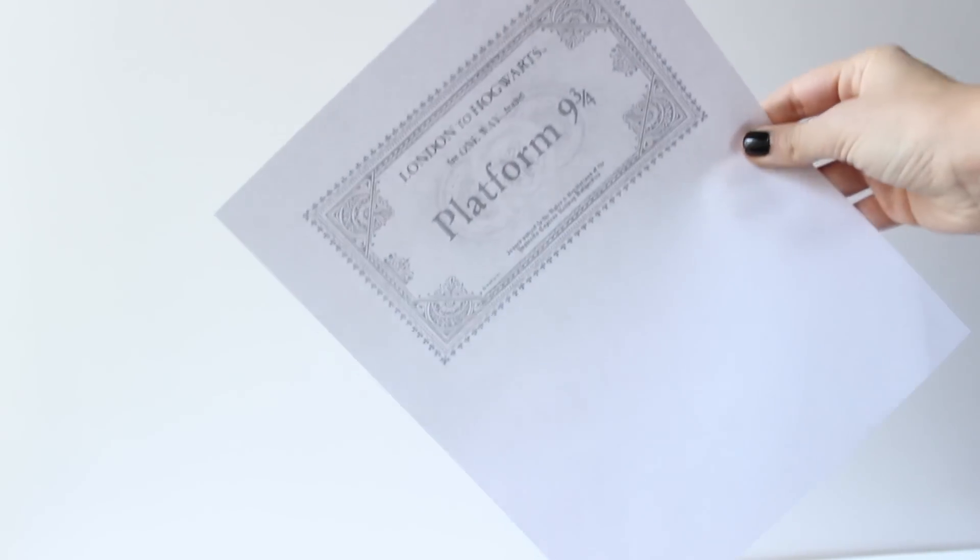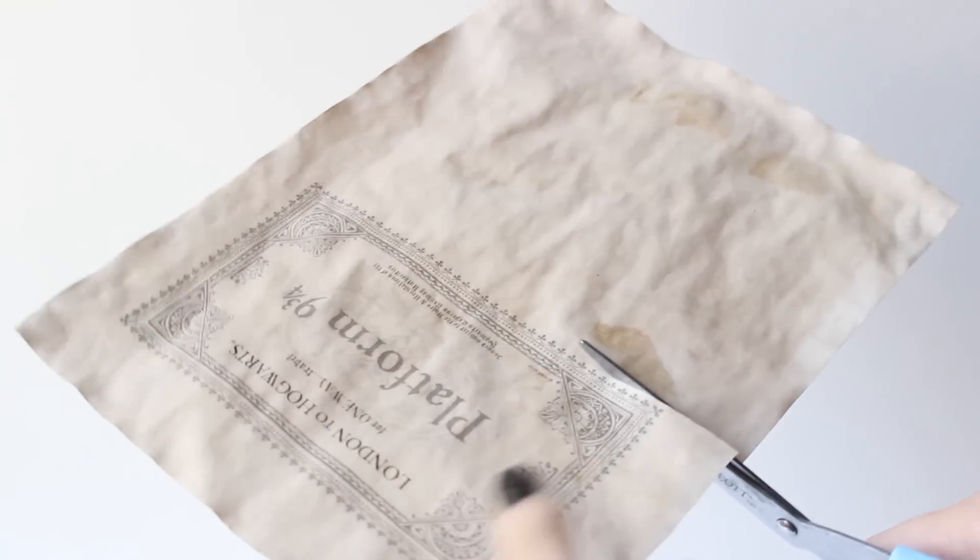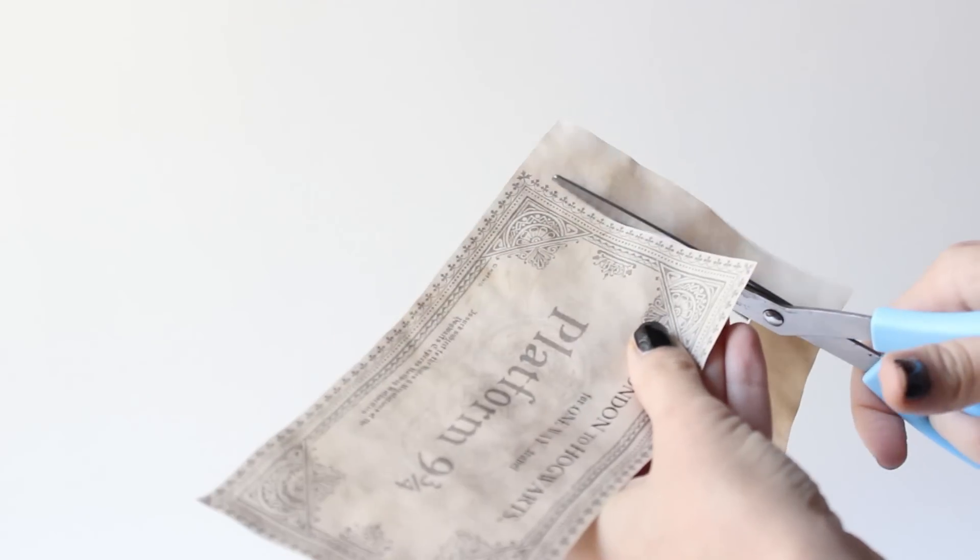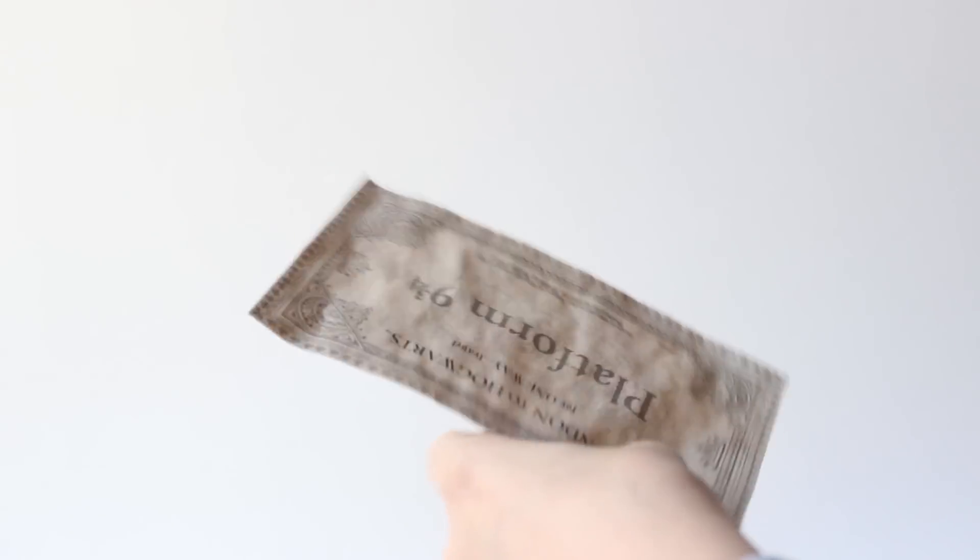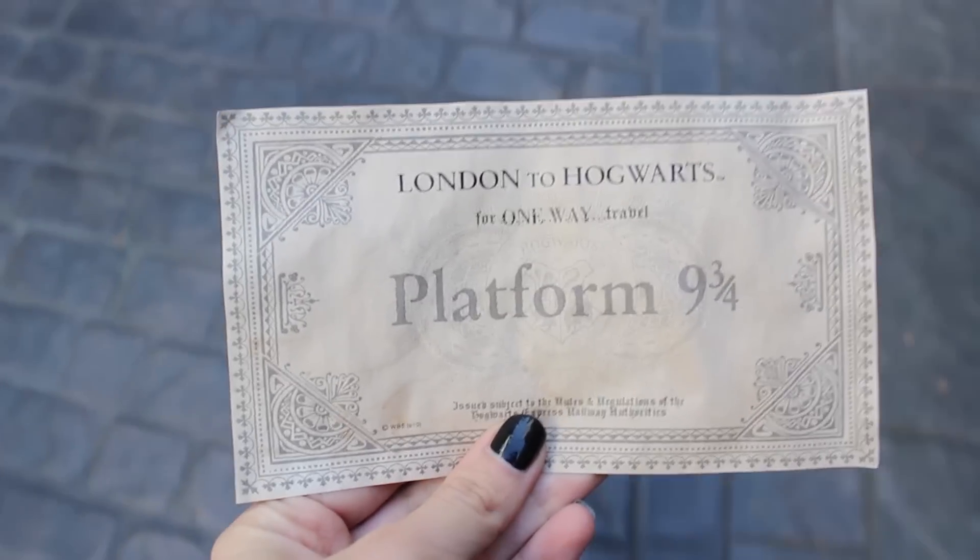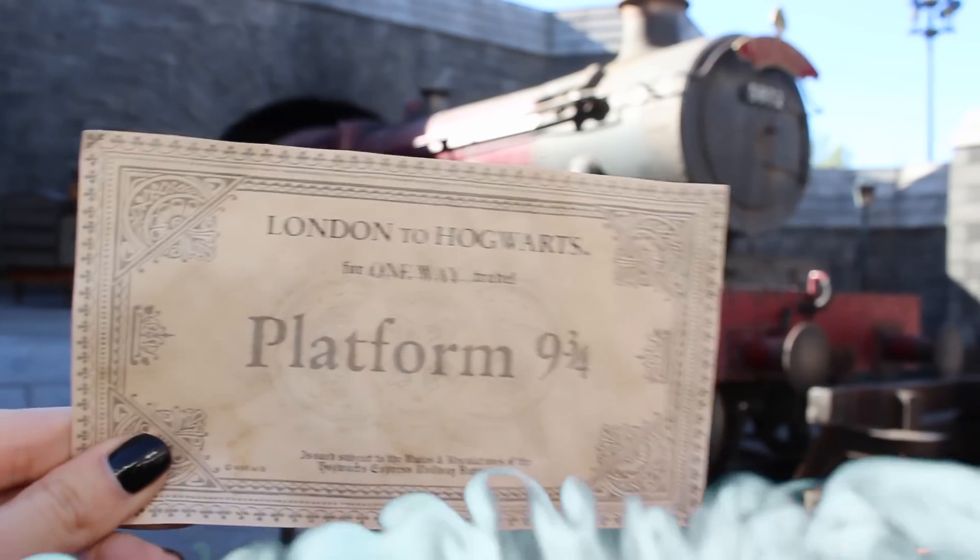Another essential part of this gift is the train ticket that I made yellow using again the tea method, and then I cut it out like this. That's it, this is super simple.